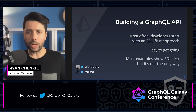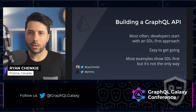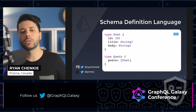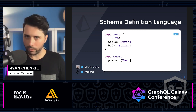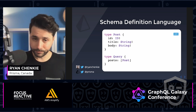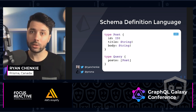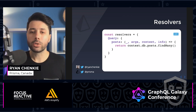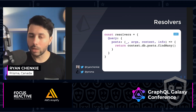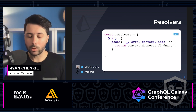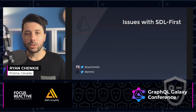You're going to see this SDL-first way of building a GraphQL server. It's easy to get started with, but ultimately it leads to some complexities better dealt with in a different approach. This is what it looks like: you have your schema-definition-language — here we've got a type of Post with three fields: ID, title, and body. We've also got our root query type returning a list of posts. But with SDL, this isn't all you need — you also need a set of resolvers. So it's two different pieces of code.